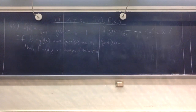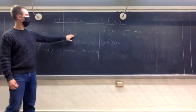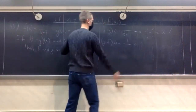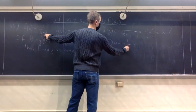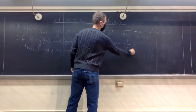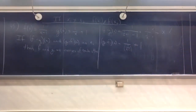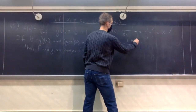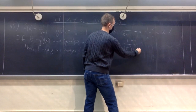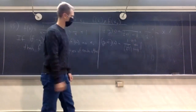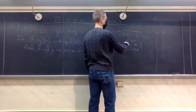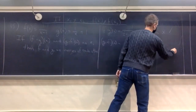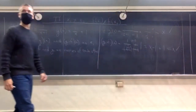Now we compute g(f(x)). We take f(x) = 1/(x−1) and plug it in for x in g, giving 1 over (1/(x−1)) plus 1. Nobody divides fractions — flip and multiply: this becomes (x−1) times 1, over 1, plus 1. That simplifies to x − 1 + 1, which is x. So these are inverses of each other.